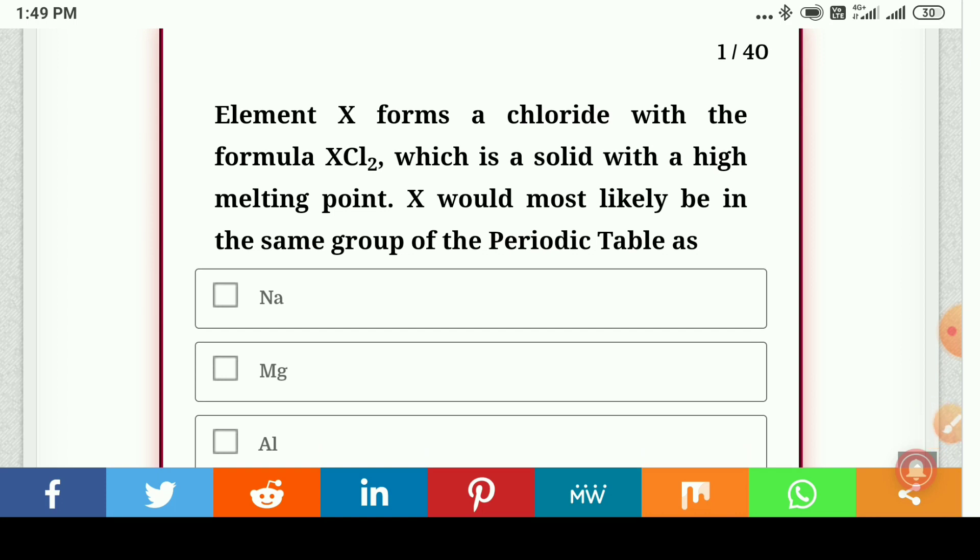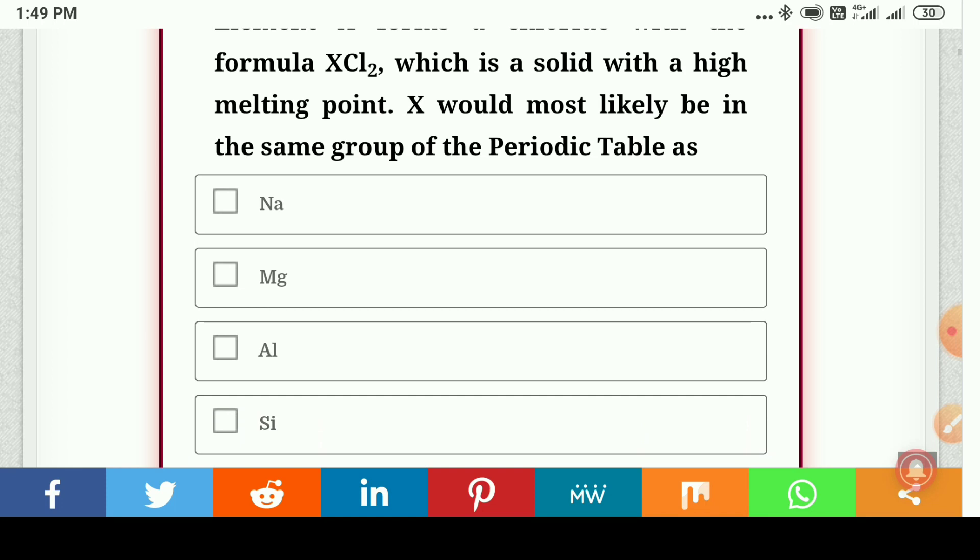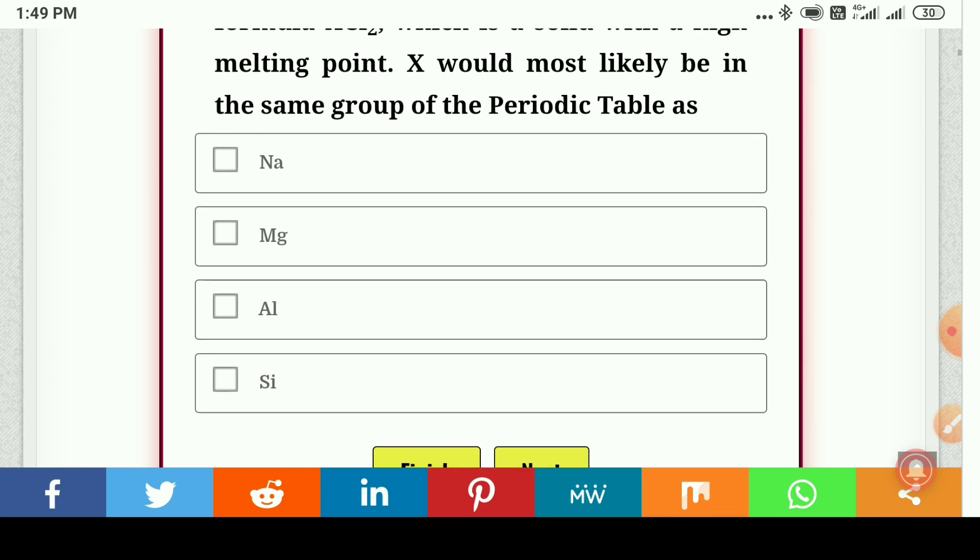Element X forms a chloride with the formula XCl2 which is solid with high melting point. X would most likely be in the same group of the periodic table as sodium, magnesium, aluminum, or silicon. So here the correct answer is magnesium.